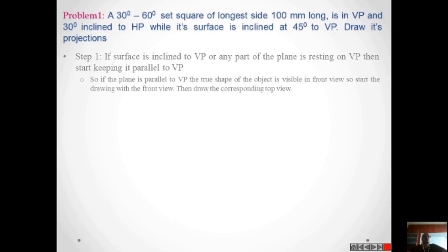The first question: a set square of 30 degrees by 60 degrees, with its longest side 100 mm long, is in VP and 30 degrees inclined to HP, while its surface is inclined at 45 degrees to VP. Draw its projections. Here two angles are given: 30 degrees inclined to HP and 45 degrees to VP.